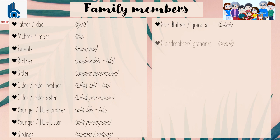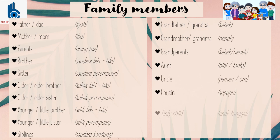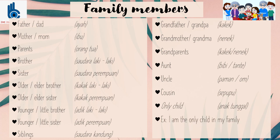Grandfather or grandpa, grandmother or grandma — they are called grandparents. Other family members include aunt, uncle, and cousin. You can also say 'only child.' For example, you can say, 'I'm the only child in my family.'